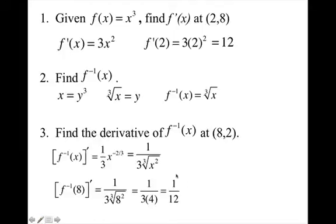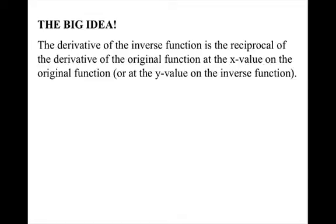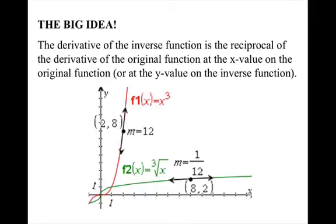For part 4, you compared the derivative of f⁻¹ to the derivative of f. The big idea is that the derivative of the inverse function is the reciprocal of the derivative of the original function — evaluated at the x value on the original function, or equivalently at the y value on the inverse. Graphically, when the original function has a slope of the tangent line at a point, the inverse function has the reciprocal of that slope at the corresponding point.